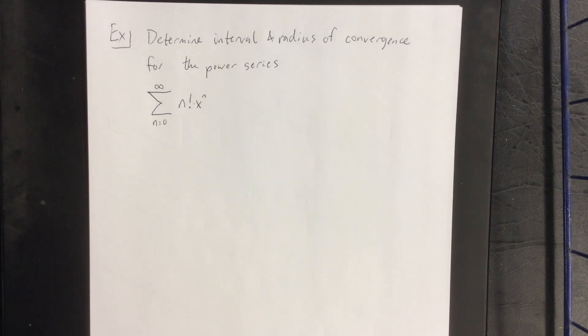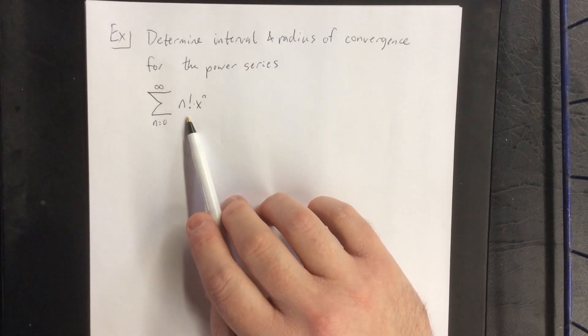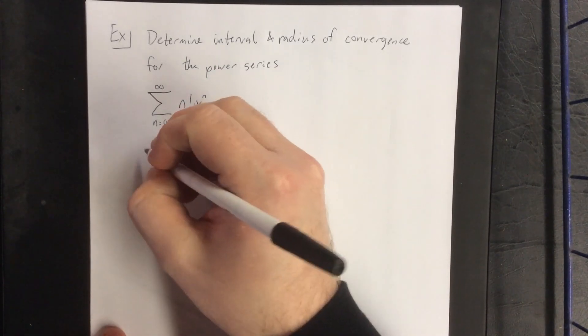Our two options for determining this will be to use either the ratio test or the root test. Because I see a factorial, we're going to stick with the ratio test.